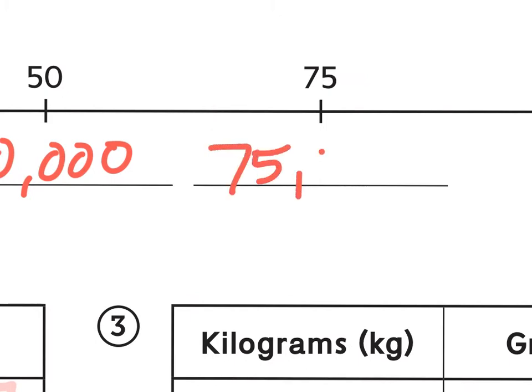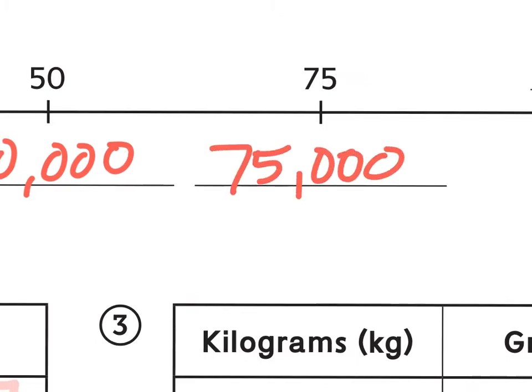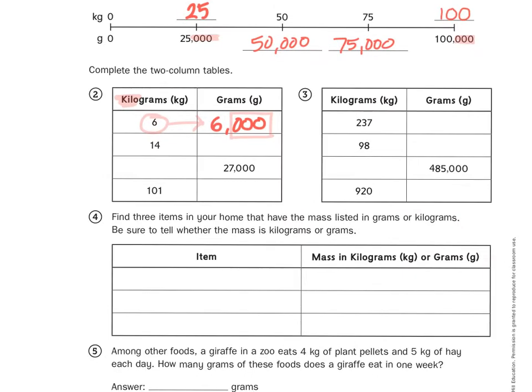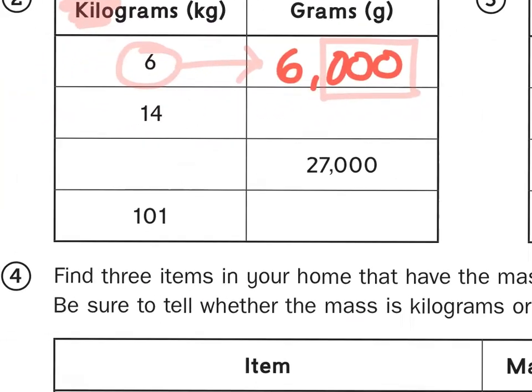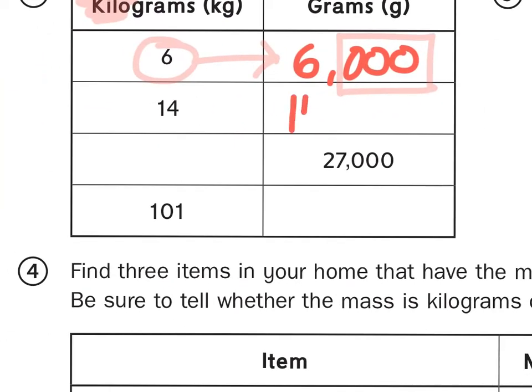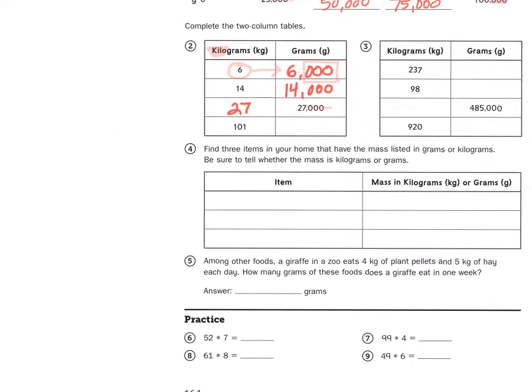Now that you have that under your belt, let's take a look at these tables. So, converting 14 kilograms to grams is as simple as just writing the number and then adding three zeros, or converting grams to kilograms is taking out the zeros and just writing the whole digit numbers, 27. You could figure out the rest, I'm sure.